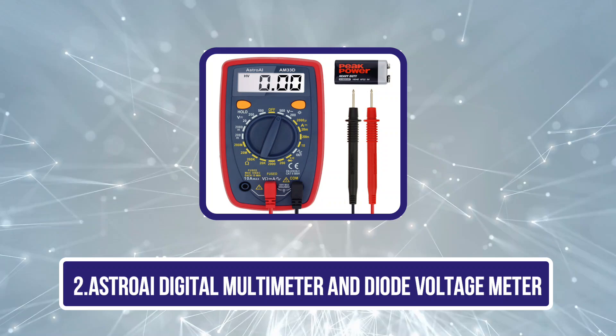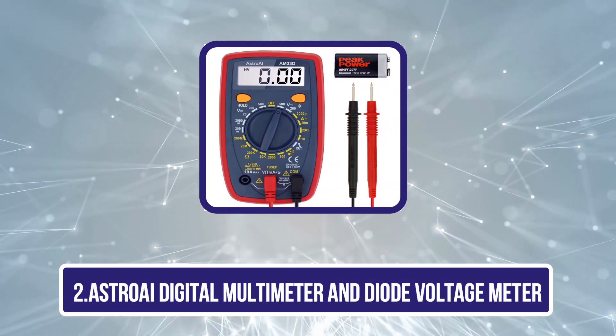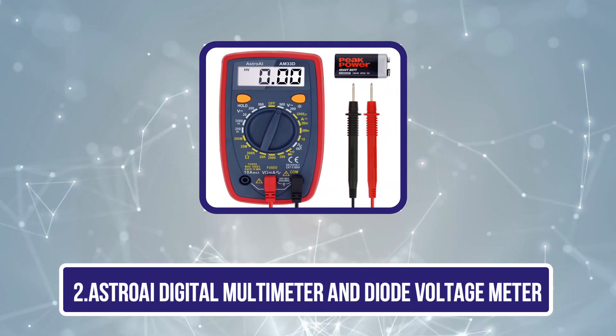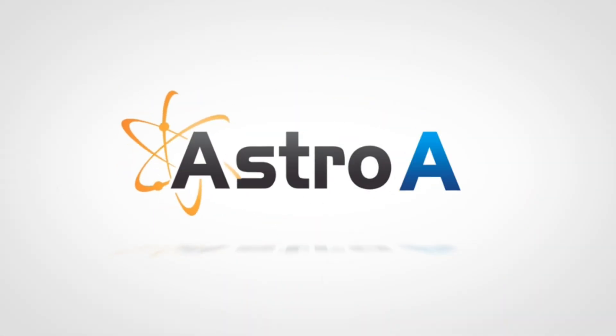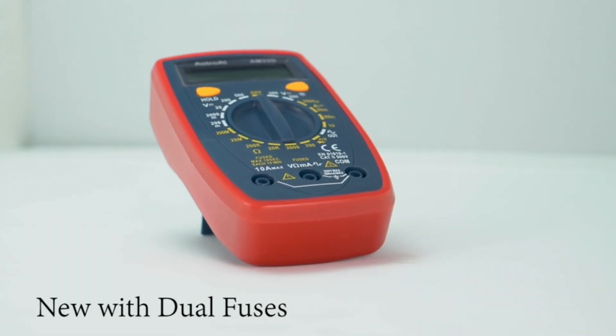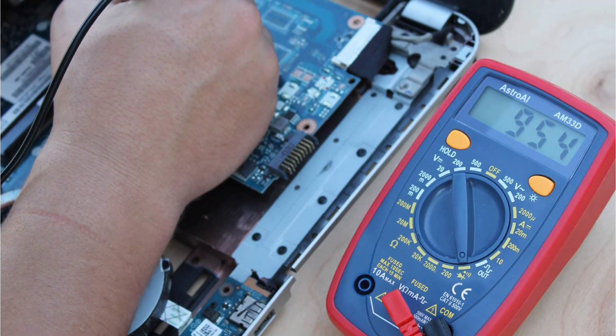Now our second product is Astro AI Digital Multimeter and Diode Voltage Meter. The Astro Digital Multimeter was designed safely to troubleshoot various domestic and automotive problems. It has many features that can function for measuring resistance, current, and voltages.